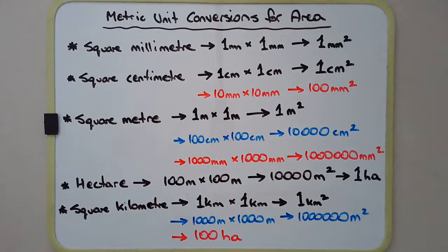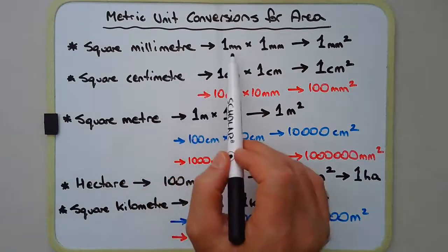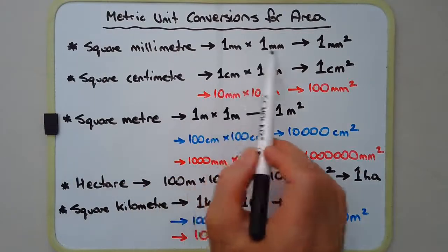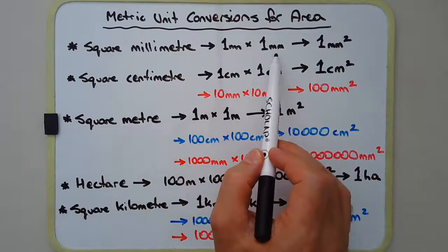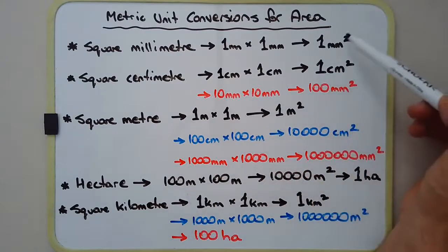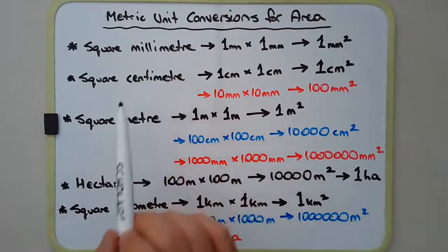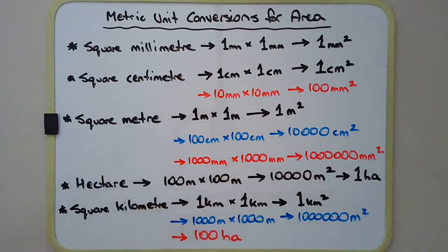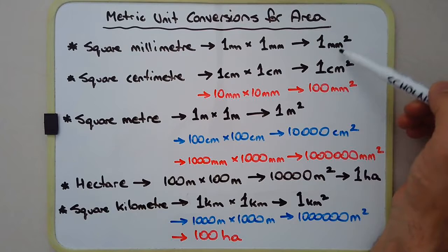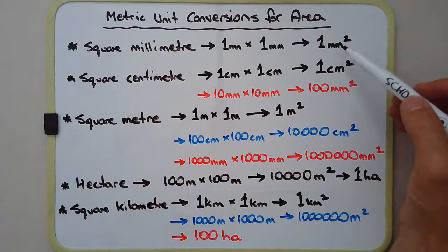Let's go through some common metric unit conversions for area. The first one is the square millimetre — think of a tiny little square with dimensions 1 millimetre times 1 millimetre. We write that as 1 mm with a little superscript 2. The correct terminology is 'square millimetre', not 'millimetre squared', even though it looks like that because of the way the unit is written.